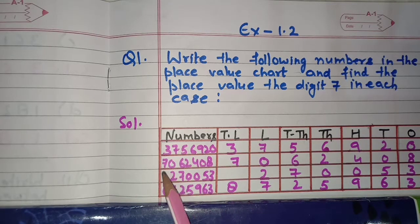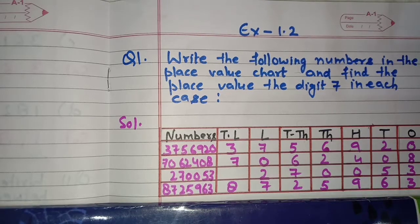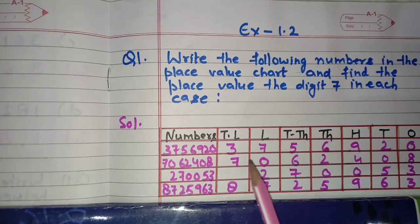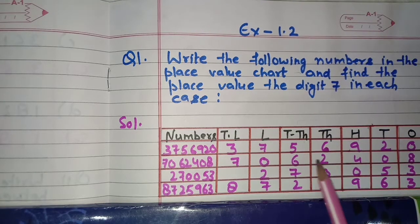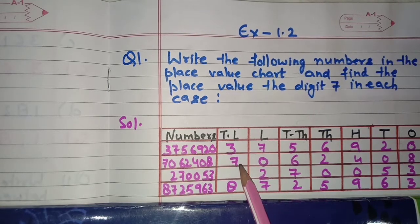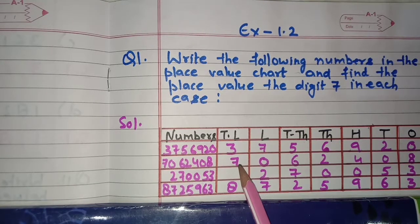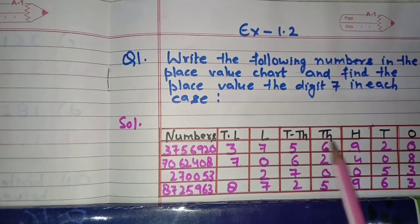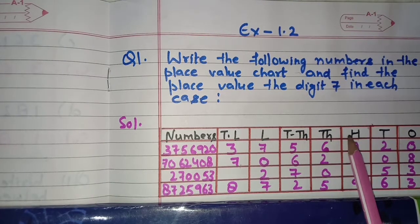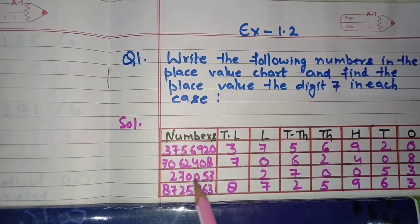The second number is 7,062,408. We begin with the ones place, writing the last digit 8 first, then 0, 4, 2, 6, 0, 7. This number reads: seventy lakh, sixty-two thousand, four hundred and eight.